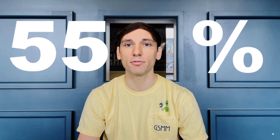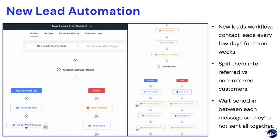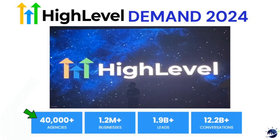Gartner predicts that 69% of all manager work will be automated by 2024, and 55% of businesses say marketing automation tools generate more leads. High Level solves these problems with 40,000-plus agencies, 1.2 million businesses, 1.9 billion leads, and over 12 billion conversations using its software.